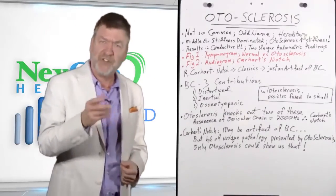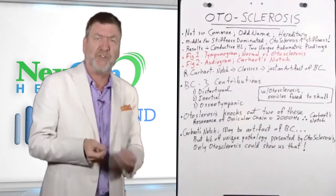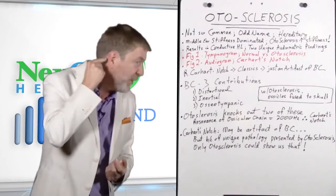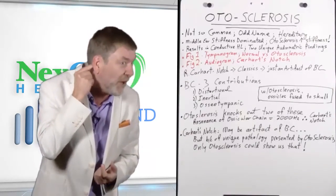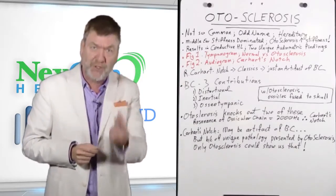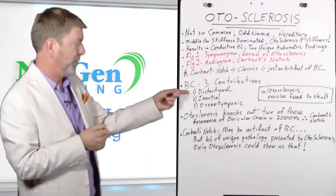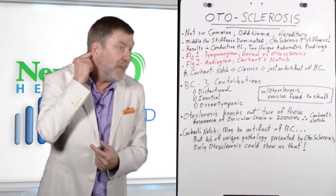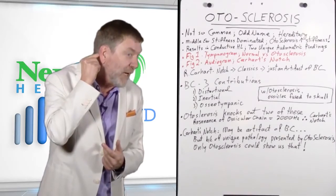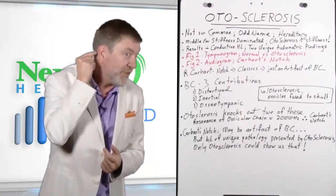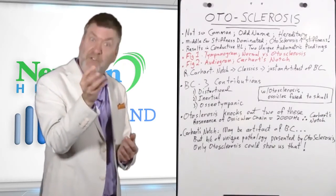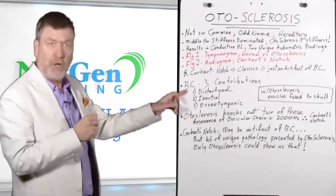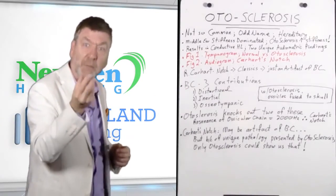With bone conduction, to have normal hearing by bone conduction, there's three main contributions to normal hearing sensitivity when we present sound through an oscillator placed on the mastoid bone. The first one is called distortional bone conduction. Distortional bone conduction means you're just activating a cochlear traveling wave by vibrating the mastoid bone when you're presenting a tone this way. You're causing the hair cells to be excited, and the patient or the client responds. That's the main contribution to normal hearing by bone conduction.